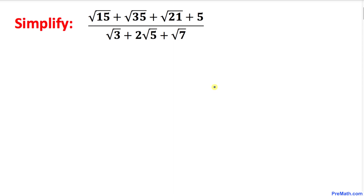Welcome to Pre-Math. In this tutorial we have a radical rational expression and we are going to simplify it. Our problem is: the square root of 15 plus square root of 35 plus square root of 21 plus 5, everything divided by square root of 3 plus 2 times square root of 5 plus square root of 7. Let's get started with the solution.